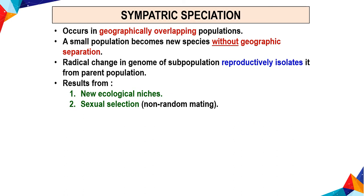Sympatric speciation occurs in a geographically overlapping population. A small population becomes a new species without geographic separation. A radical change in the genome of a sub-population reproductively isolates it from the parent population. This results from a new ecological niche and sexual selection or non-random mating.